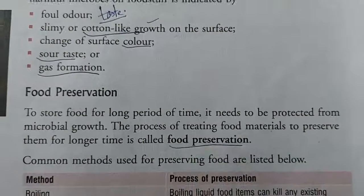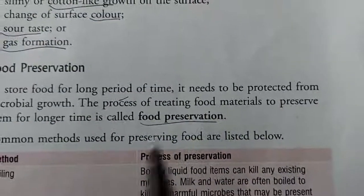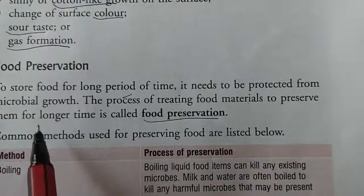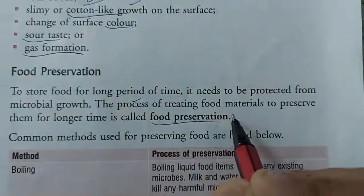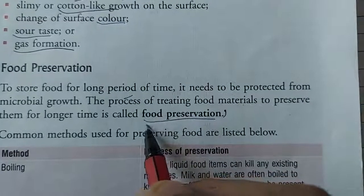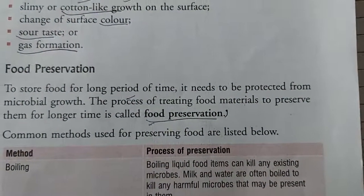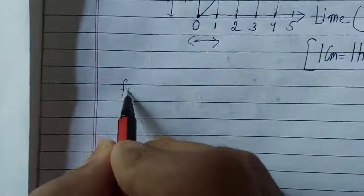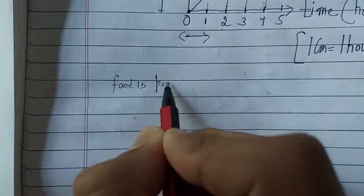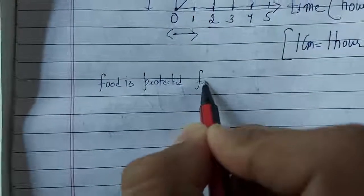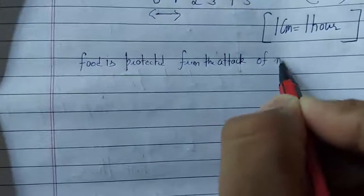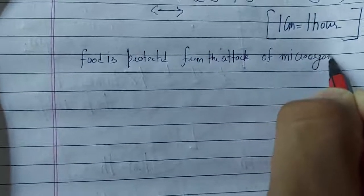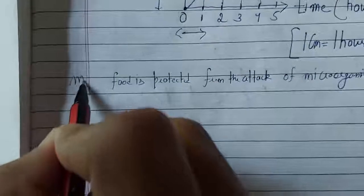Food preservation is a process in which food is treated and protected from the attack of microorganisms. It includes all the methods in which food is protected from the attack of microorganisms.